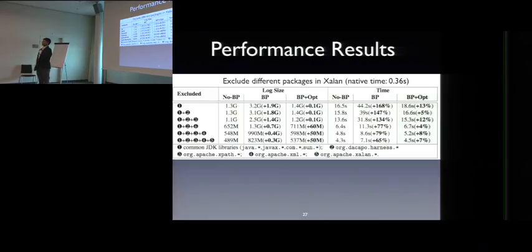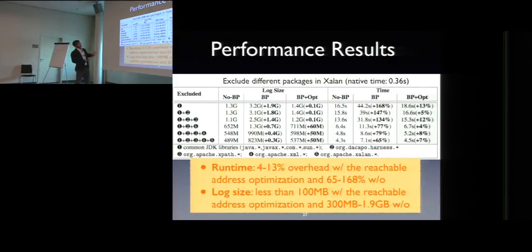And how about the performance of doing this runtime reachable address computation? So we try to pick a CPU-intensive benchmark, which is ZALAN. And we exclude common JDK libraries. We try to exclude some packages from this program. For example, XPath, Harness, XML, ZALAN. And we try to have different combinations of this exclusion. And in general, with all these libraries excluded, runtime overhead with optimization actually reduced from more than 100% on average to around 10%. And log size also significantly reduced.